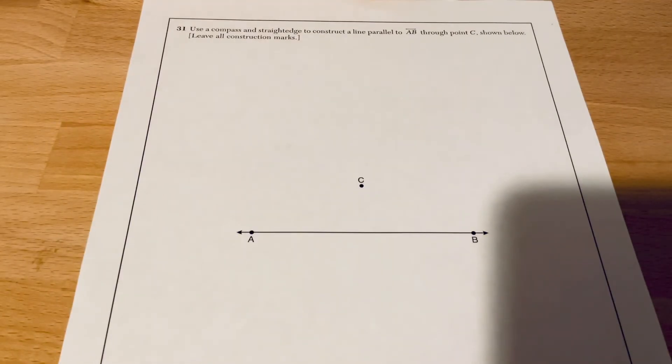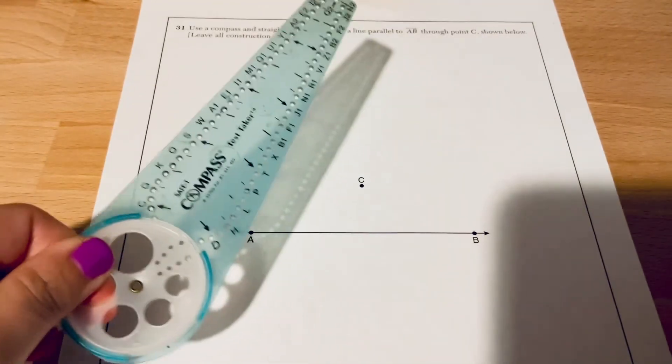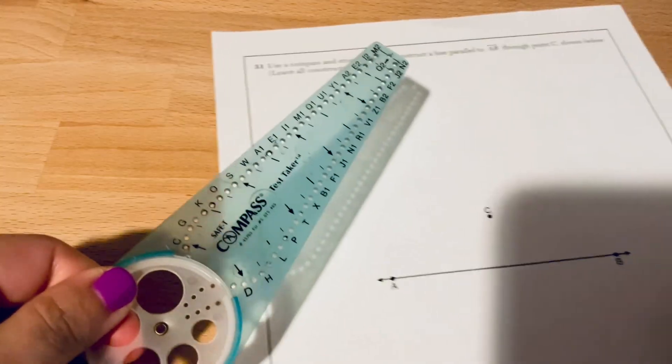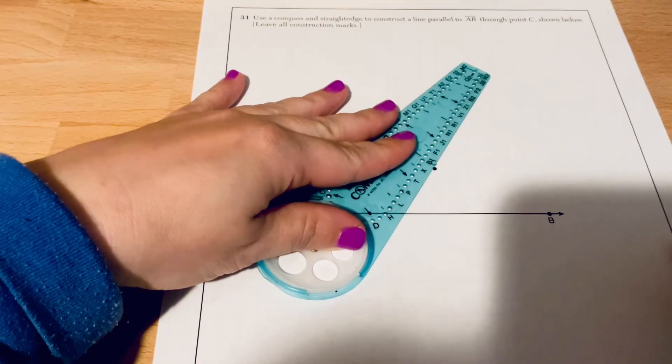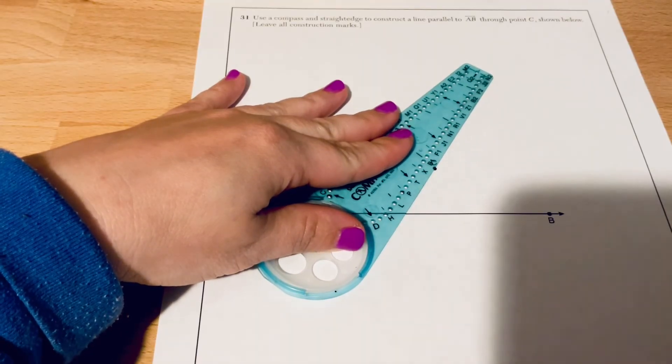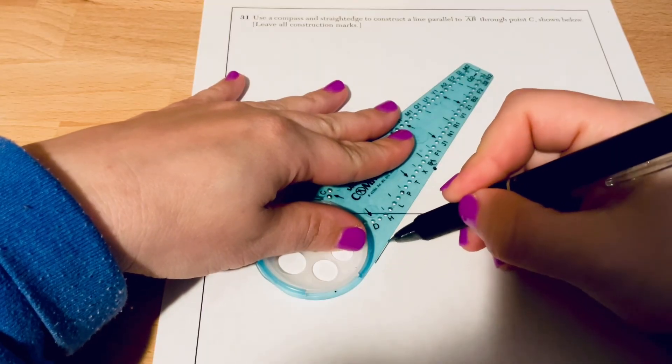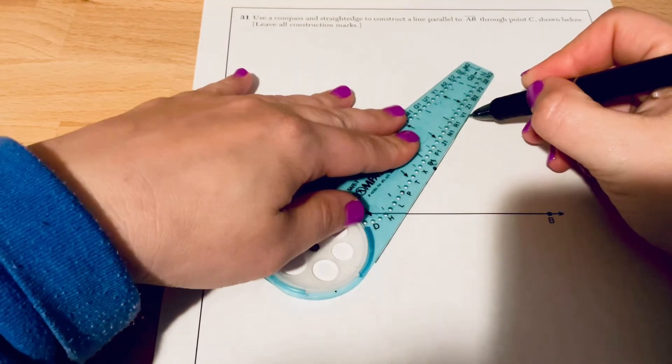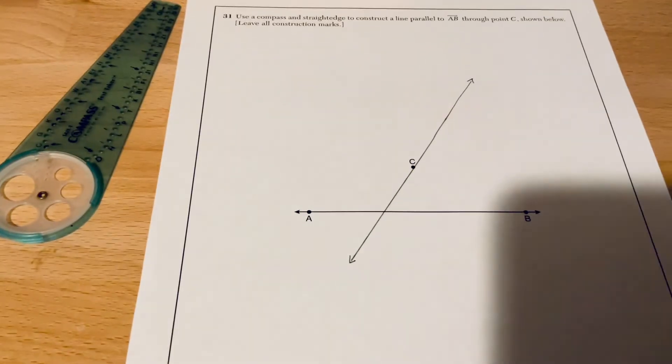For number 31, we have a construction. It says use a compass and straight edge to construct a line that is parallel to AB that goes through point C as shown below. The first thing we're going to do, I'm using my safety compass. And I'm going to use it as a straight edge as well. The first thing I'm going to do is draw a nice big transversal here. So the transversal is this line that will ultimately be going through the two parallel lines.